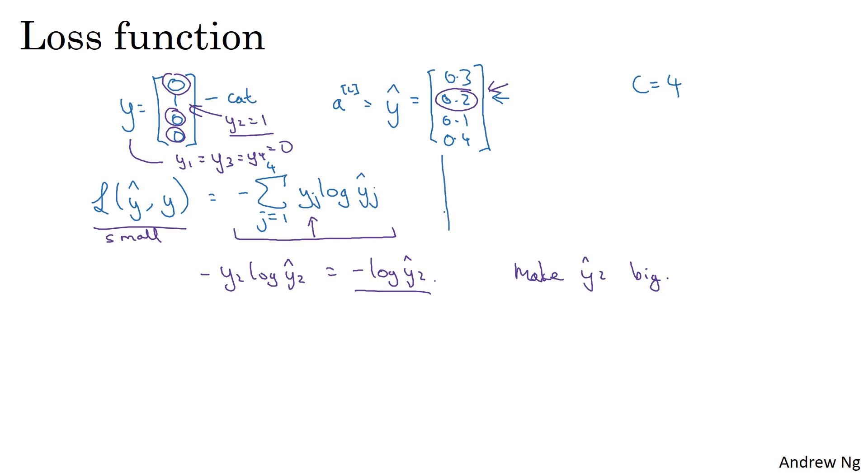Now, this is the loss on a single training example. How about the cost, J, on the entire training set? So the cost of the setting of the parameters, and so on, of all the weights and biases, you define that as pretty much what you'd guess: sum over your entire training set of the loss, your learning algorithm's predictions, summed over your training examples. And so what you do is use gradient descent in order to try to minimize this cost.